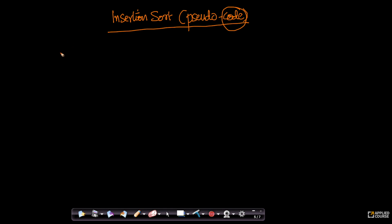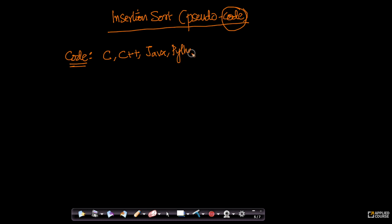We had a few choices. We could have written this whole code in any major programming language. We could have written it in C, C++, Java, Python, or more web-based languages like JavaScript or Ruby. We could have written the code in any of these programming languages.